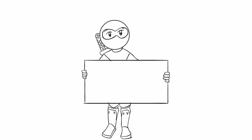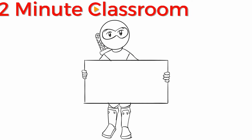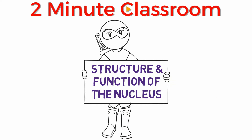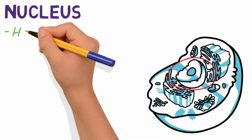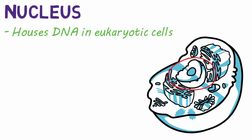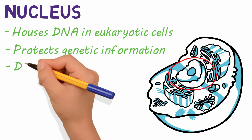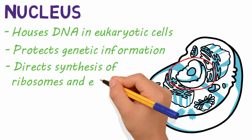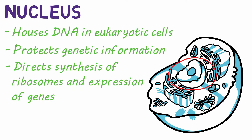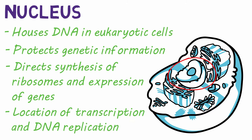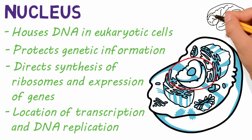Thanks for stopping by. This is 2-Minute Classroom and today we're talking about the structure and function of the nucleus. The nucleus sits in the center of eukaryotic cells and houses the DNA. It protects your genetic information and directs the synthesis of ribosomes and the expression of your genes. It's also the location of transcription and DNA replication. You can think of it as the brain of the cell.